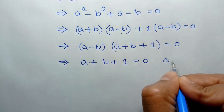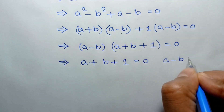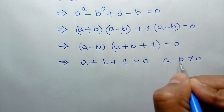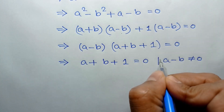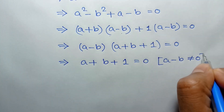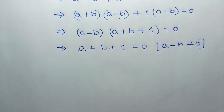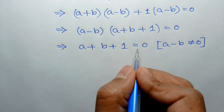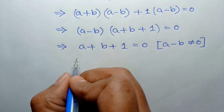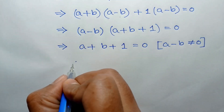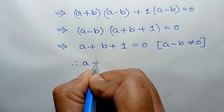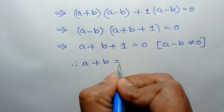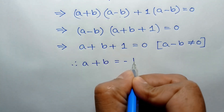Taking 1 to the right side, we will have A plus B is equal to negative 1.